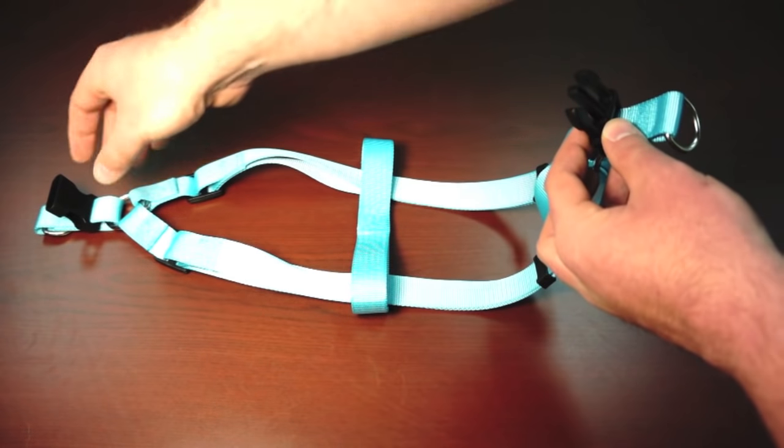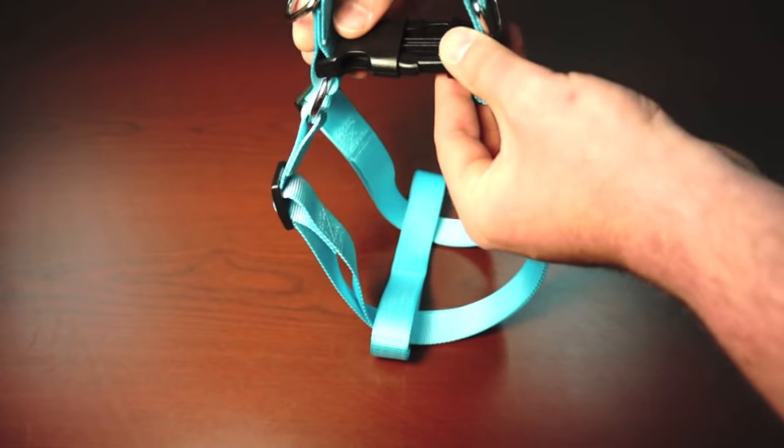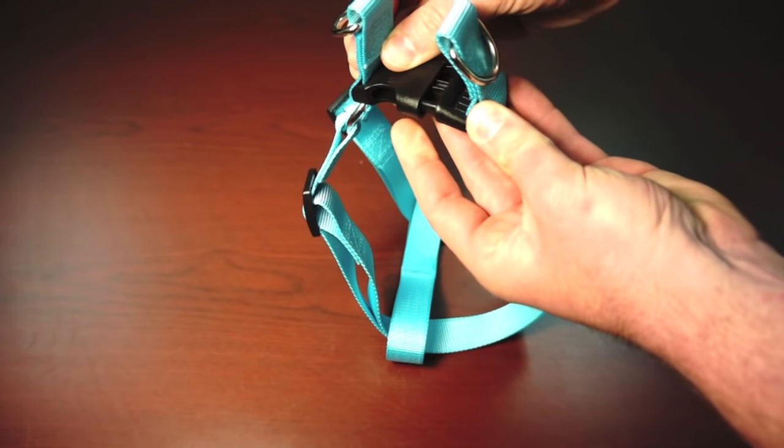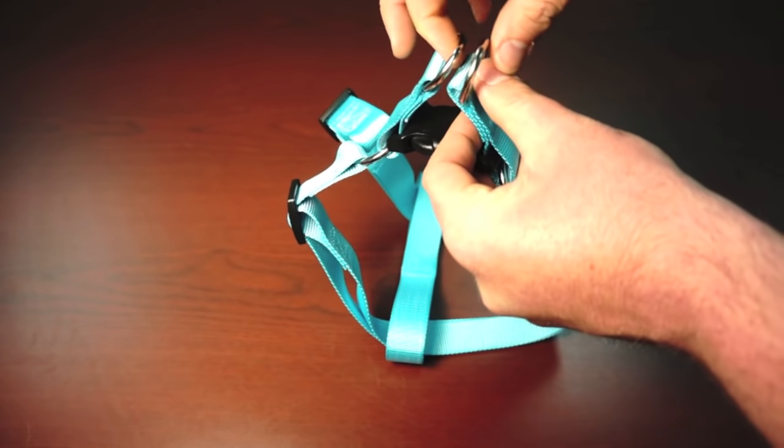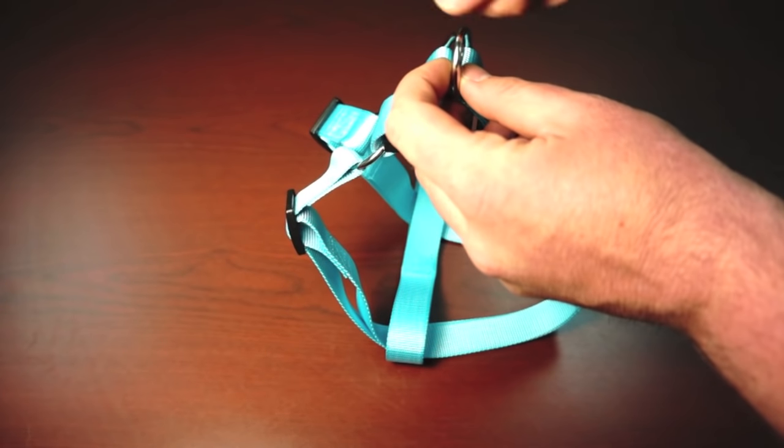and then you should be able to pick up the harness, buckle like this, put the two D-rings together, and this is where you would attach the leash here.